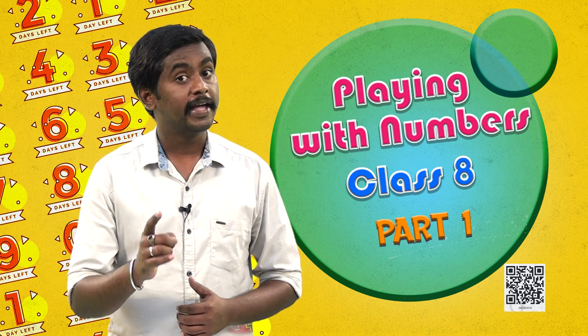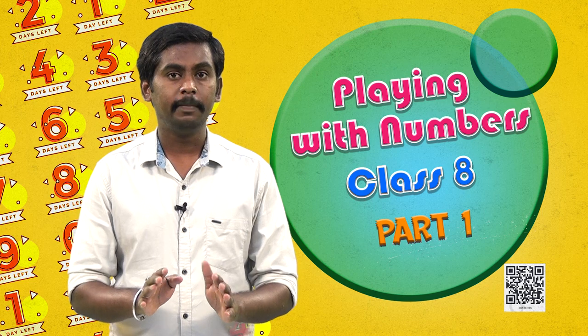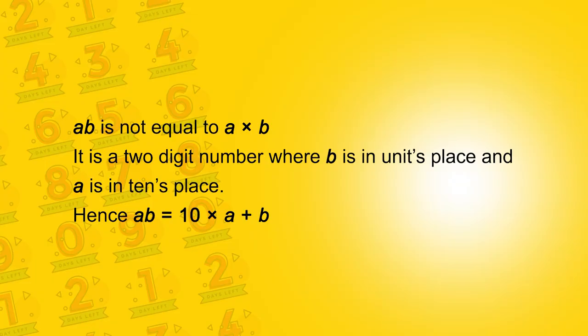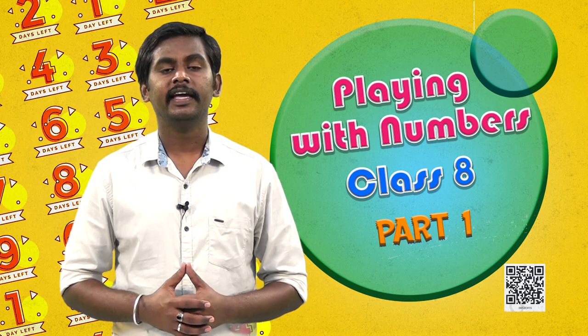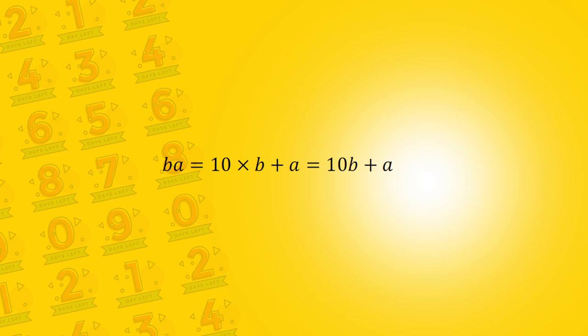Students, make a note that here AB doesn't mean A times B. AB is not equal to A times B — it is a two-digit number where B is in the units place and A is in the tens place. Hence AB is equal to 10 times A plus B. Similarly, BA can be written as BA is equal to 10 times B plus A, that is equal to 10B plus A.